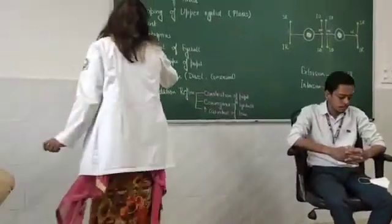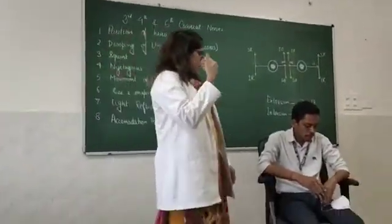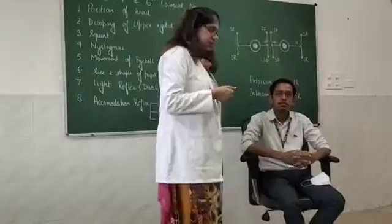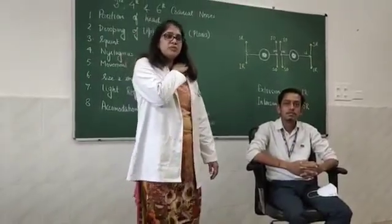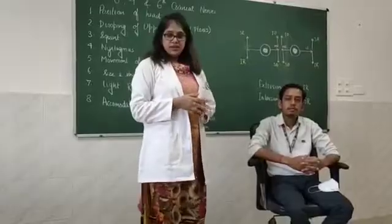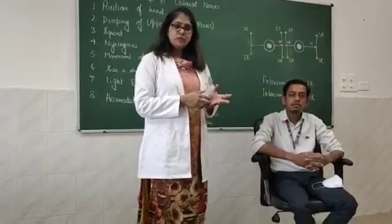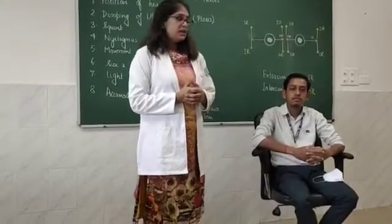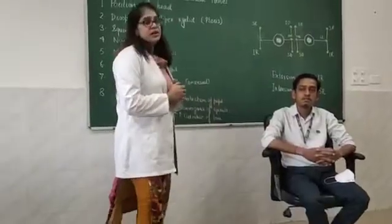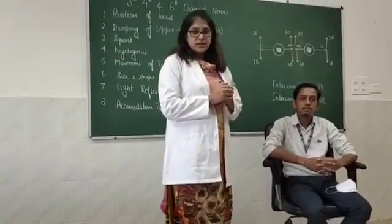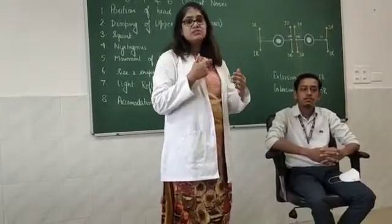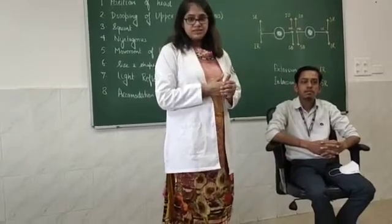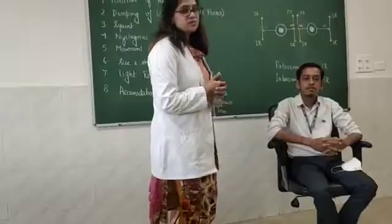Now we look at the size and shape of the pupil. In our subject, the shape of both pupils is circular and the size is equal. The size is important because in case of palsy of the third cranial nerve, the pupil on that side will be dilated. The shape is important because in case of iritis, the iris may become attached to the lens and produce a distorted shape of the iris.